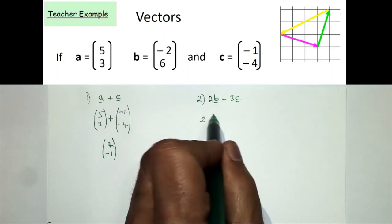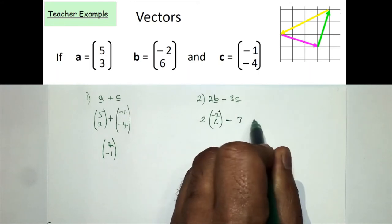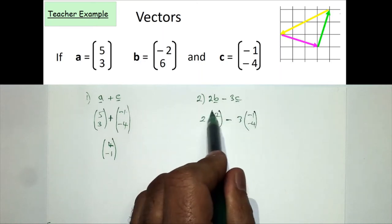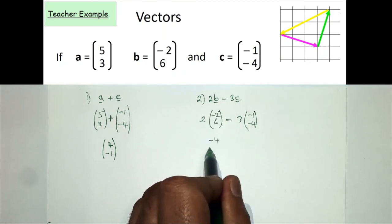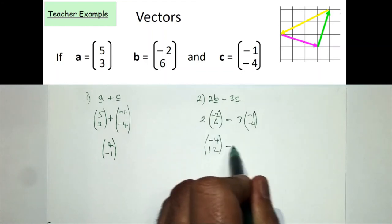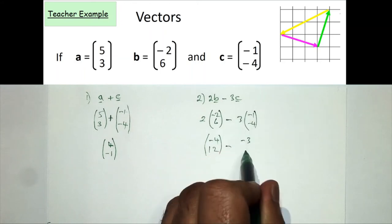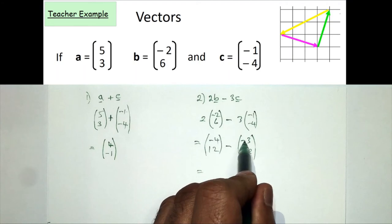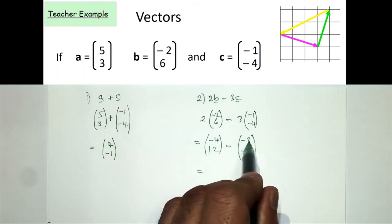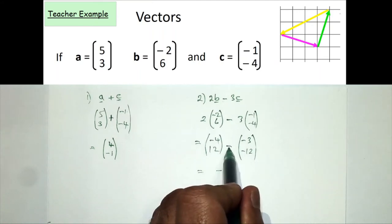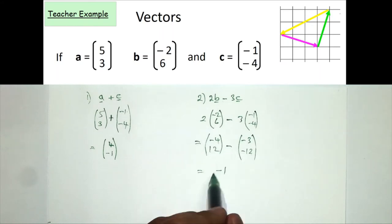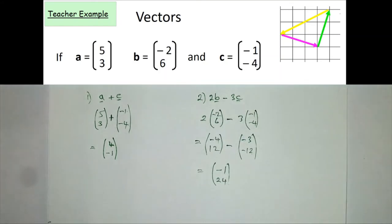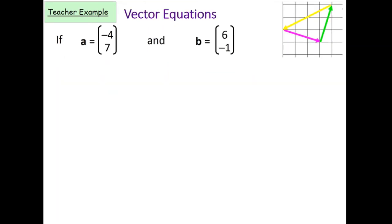For the second example, 2b minus 3c: substituting in, that's 2 times (-2, 6) minus 3 times (-1, -4). Expanding: 2 times -2 is -4, 2 times 6 is 12, giving (-4, 12). Then 3 times -1 is -3 and 3 times -4 is -12, giving (-3, -12). Subtracting: -4 minus -3 is -4 plus 3 which is -1, and 12 minus -12 is 12 plus 12 which is 24. So the resultant vector is (-1, 24).